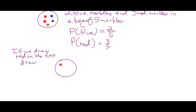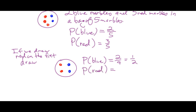Here's what's left in the bag after drawing red. If we drew a red on the first draw, what's the probability of drawing a blue on the second draw? Two out of four, or one half. If you drew a red on the first, what's the probability of drawing a red on the second draw? Two out of four again — there are two reds out of four marbles remaining.